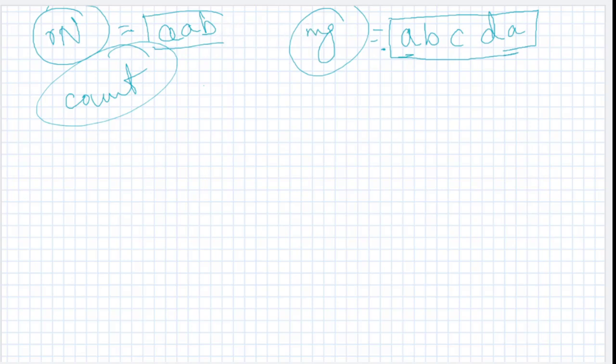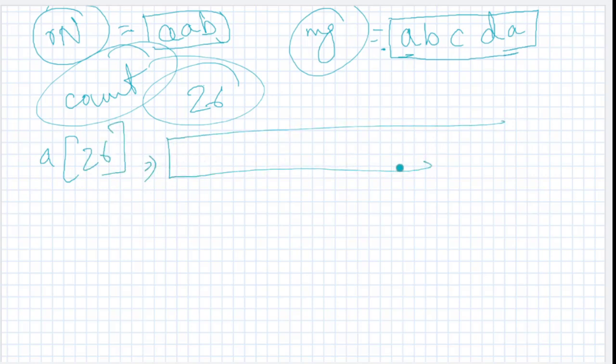So somewhere we need to keep in mind the count of that particular alphabet. We know we have 26 alphabets, so we need to create an array with 26 spaces.